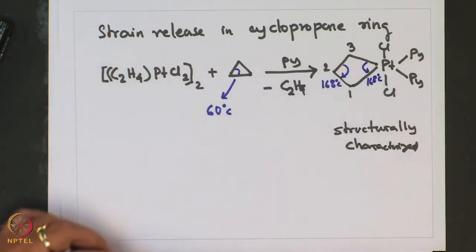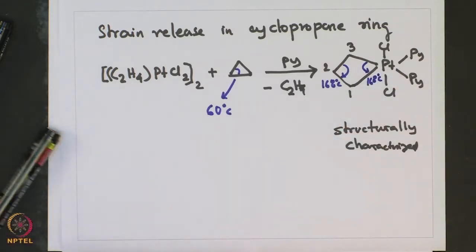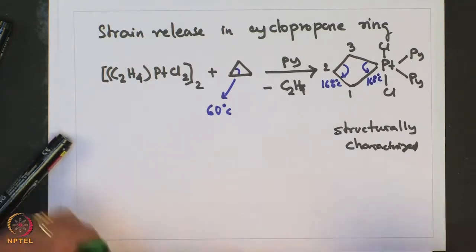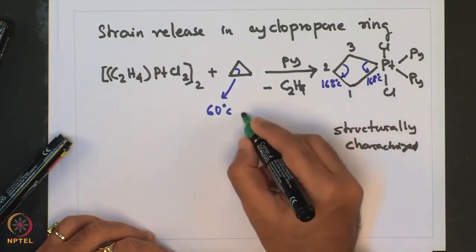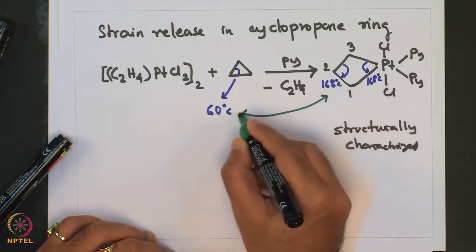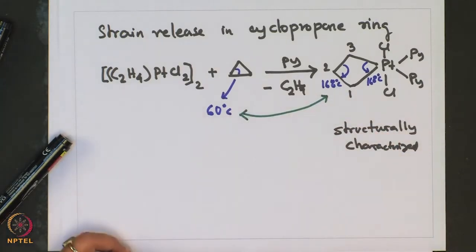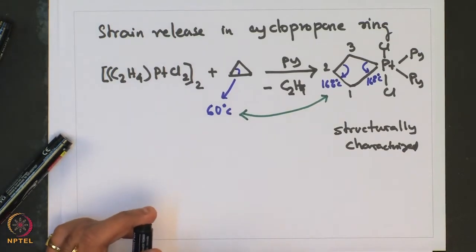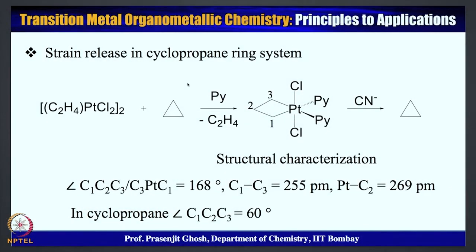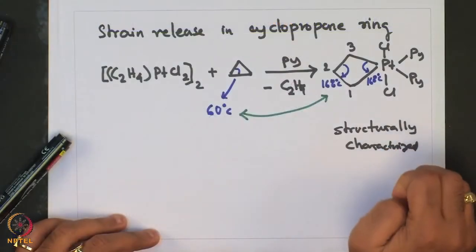What one sees is an increased release of ring strain going from 60 degrees to 168 degrees as a result of this metallocycle formation, and this compound has also been structurally characterized.